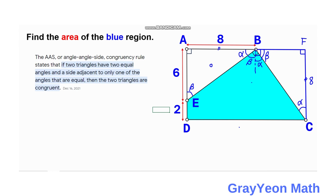The side adjacent to angle alpha is 8 units in triangle ABE, and also 8 units in triangle BFC. With this, we can say the two triangles are congruent. Therefore, length BF, which is opposite angle alpha, should equal 6 units.